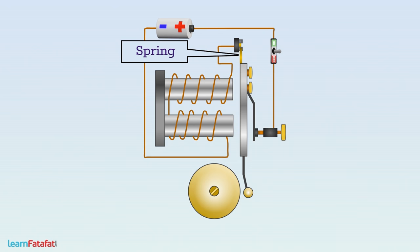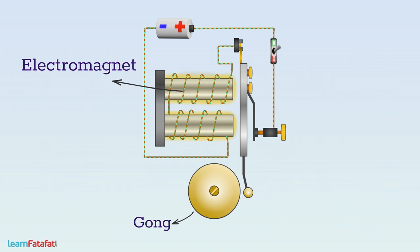The hammer is kept near the dome-shaped structure called a gong. As soon as the switch is turned on, current flows through the coil making it an electromagnet. It attracts the soft iron strip, and so the hammer strikes the gong, producing sound.